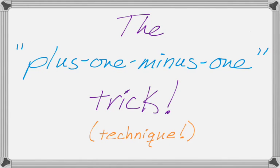Okay, in this video we're going to talk about something I call the plus one minus one trick. If you don't like calling things tricks, call it a technique. It's kind of neat. So here's the idea, and it's not earth shattering, but it's that one minus one is equal to zero.